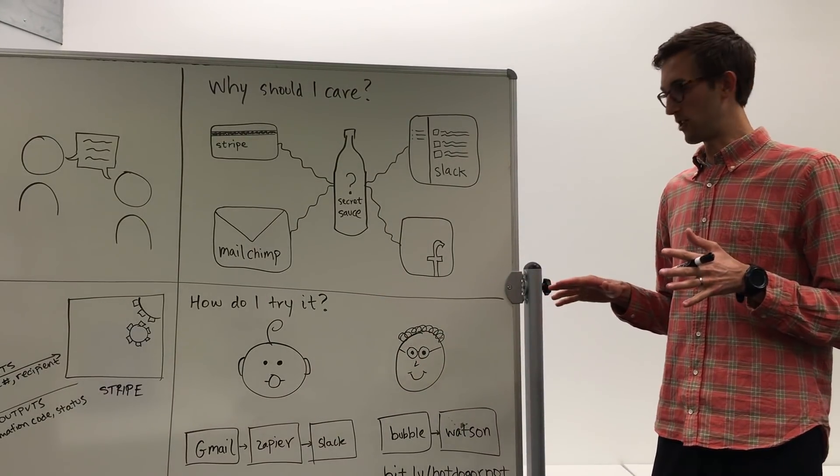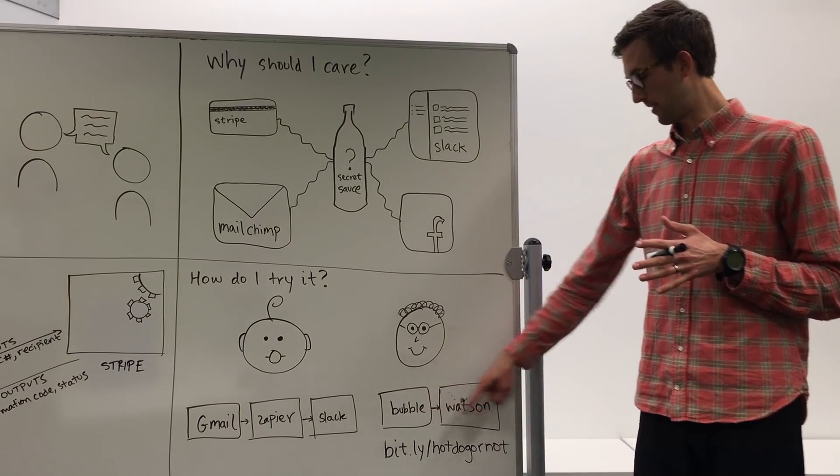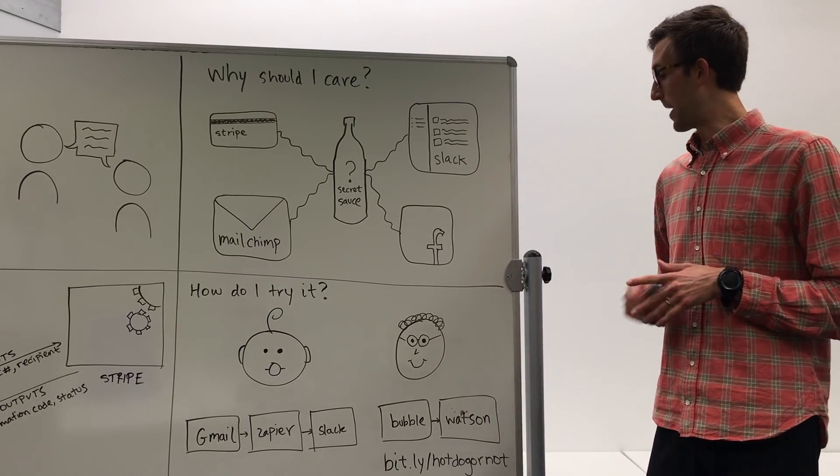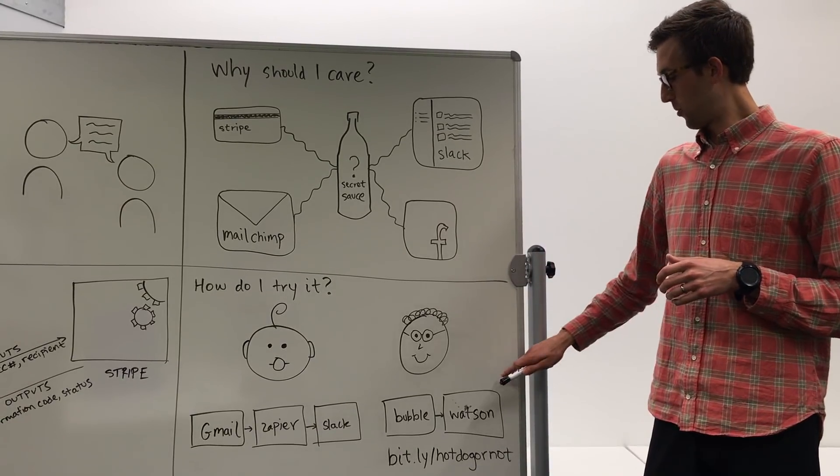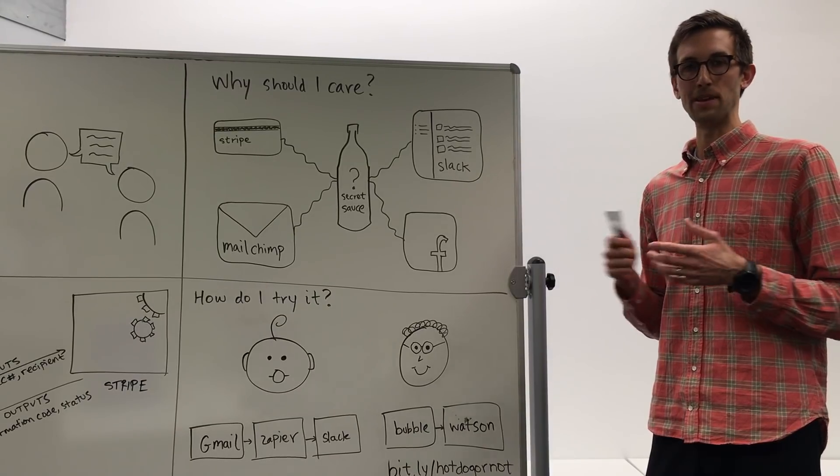If you're a little bit more adventurous, we actually wrote a little tutorial that you can find at bit.ly slash hotdog or not. And this actually connects a tool called Bubble, which we use a lot to build our applications, with a really nifty AI tool called Watson. This is made by IBM, very popular.